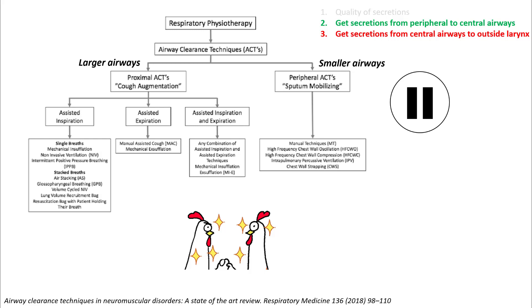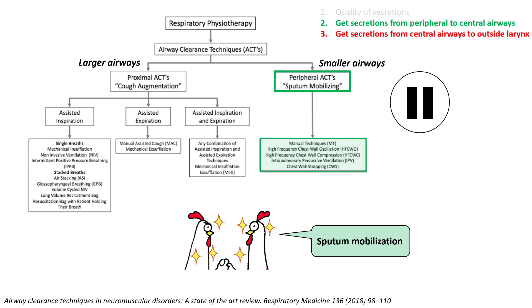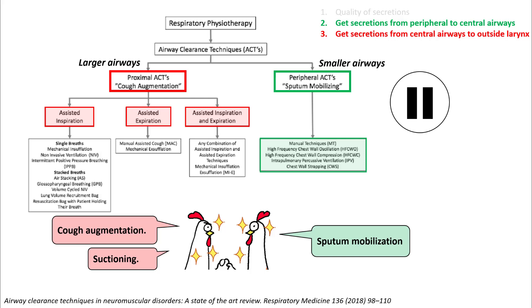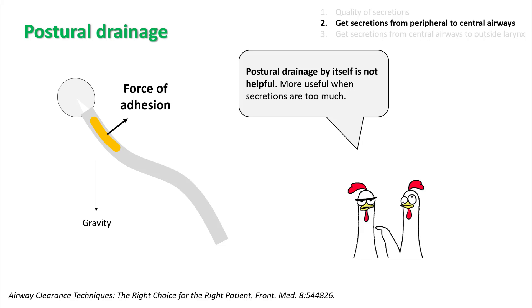Let's understand how to get secretions from peripheral to central and then outside the larynx — you can pause this video to understand the flowchart more carefully. The methods to remove secretions from airways are called airway clearance techniques, and there are two types: peripheral and proximal. Peripheral ACTs remove secretions from smaller airways to central airways in sputum mobilization. Removal from larger airways to outside is proximal airway clearance therapy, also called cough augmentation. You have to use them together to achieve the best results.